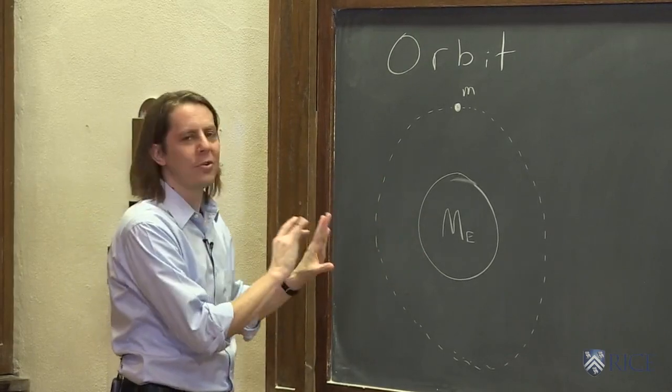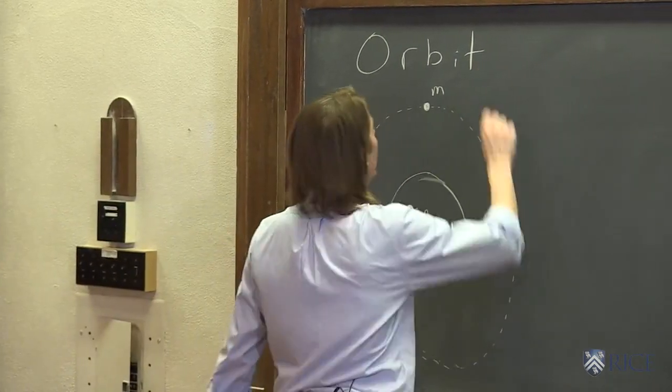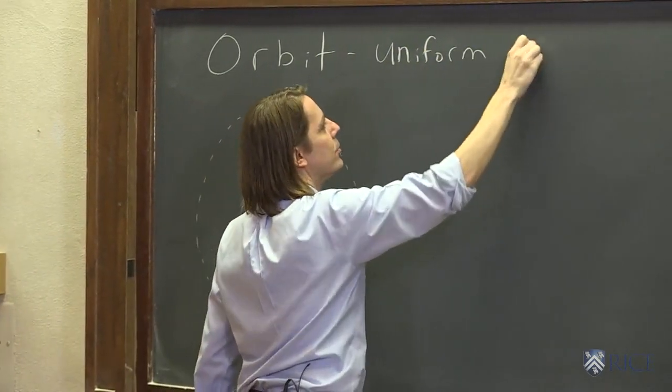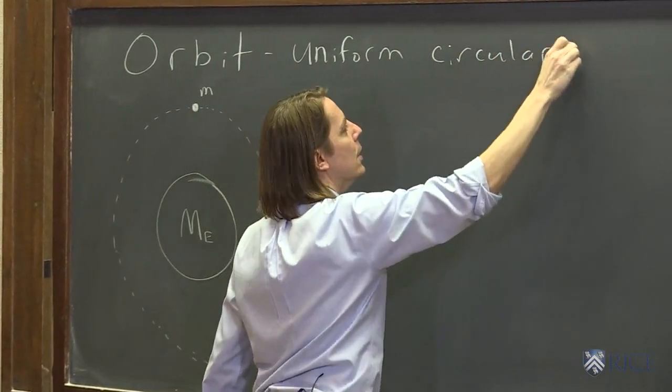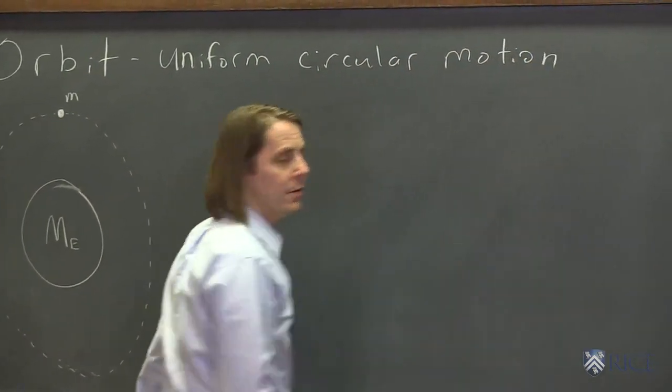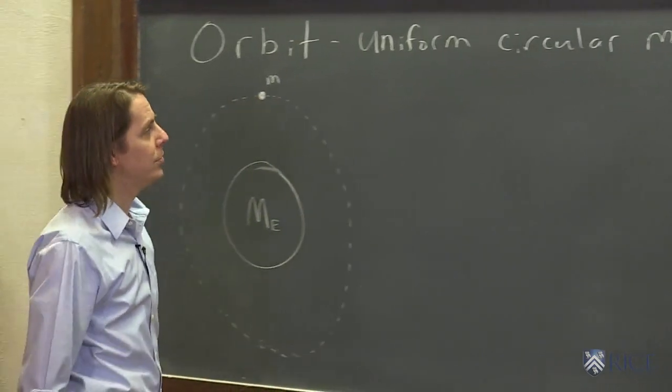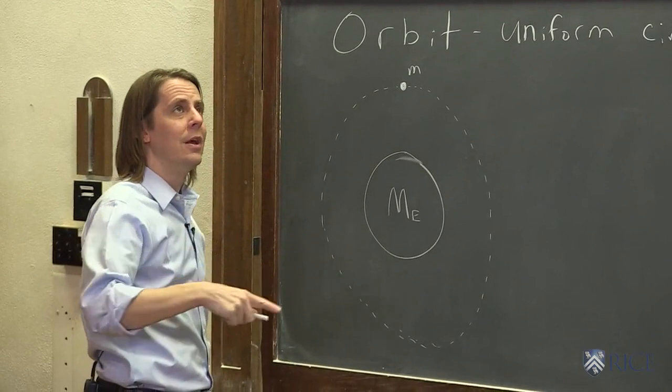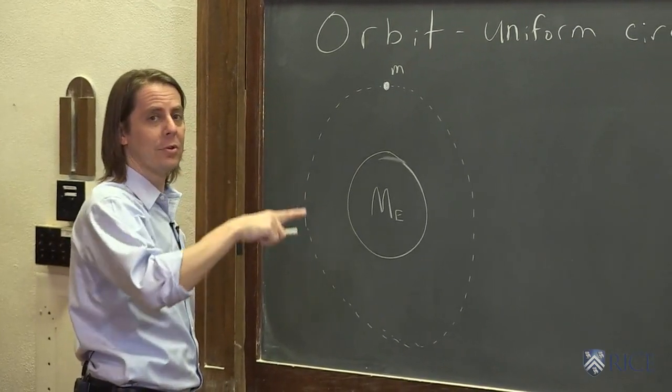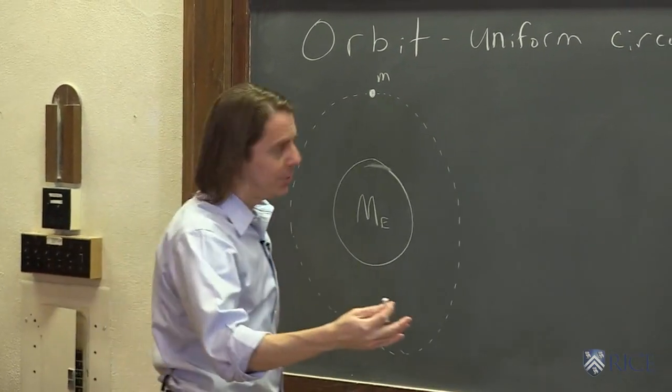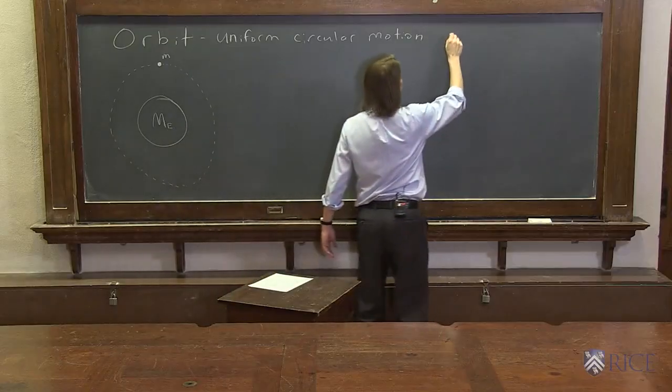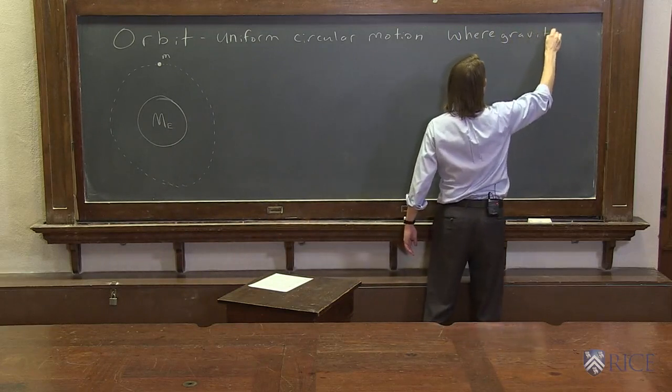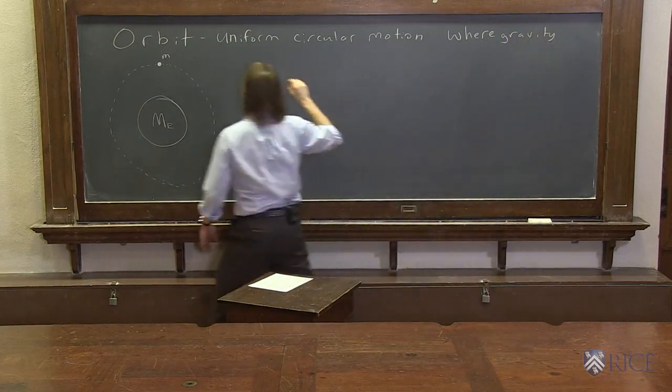But just to start simple, let's stick with this idea. So our definition of orbit for now is just uniform circular motion and that's a familiar idea. We've talked about uniform circular motion earlier in this part of the course and the key for uniform circular motion is that there is a centripetal force providing a centripetal acceleration. So all an orbit is, is uniform circular motion where gravity provides the centripetal force.